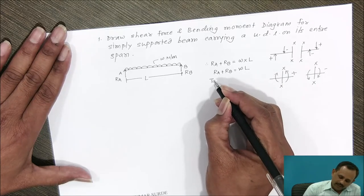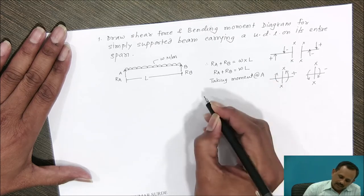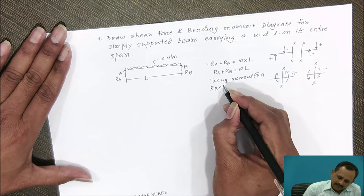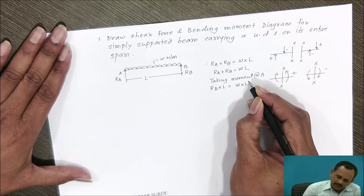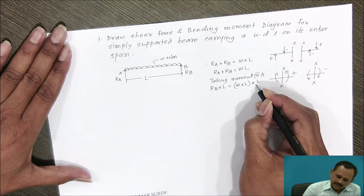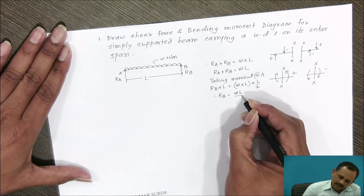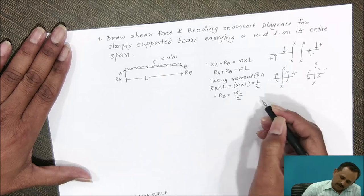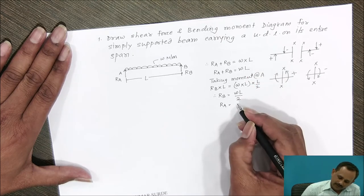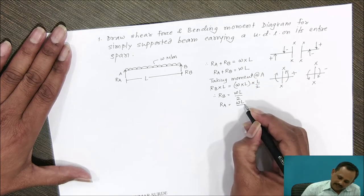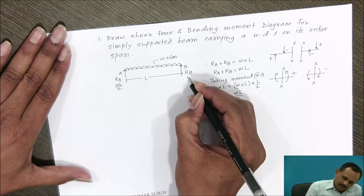Taking the moment about point A, we get Rb into L — this moment is in the anticlockwise direction — which is equal to the total load W into L acting as a point load at a distance L by 2. Therefore, reaction at B is equal to WL divided by 2. Reaction at A can be obtained by substituting the value of Rb in the above equation, giving reaction at A equal to WL by 2. Therefore, Ra equals Rb equals WL by 2.